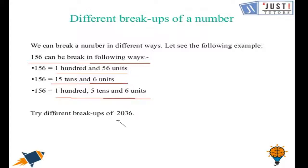Now let us try different breakups of number 2036. Either it can be written as 2000, 3 tens and 6 units. You can write units or ones, both ways are correct. Either you can write 20 hundreds, 3 tens and 6 units, or you can break this number as 2036 units. These are the few ways in which you can do breakups of this following number.